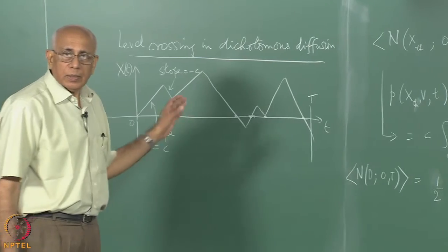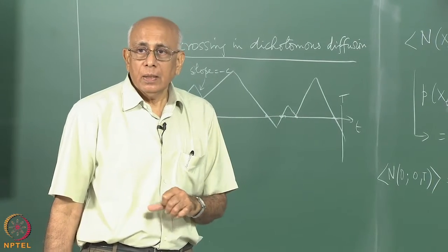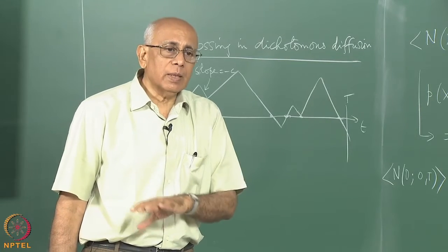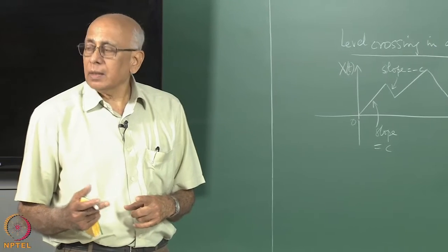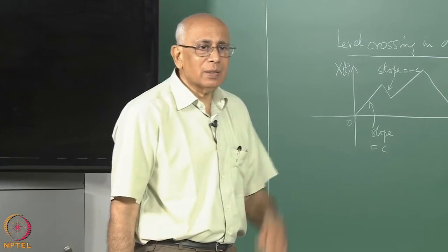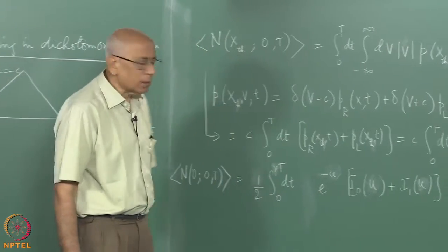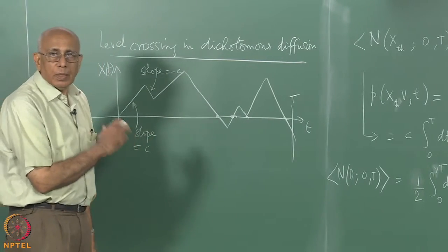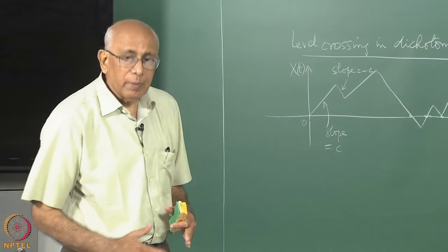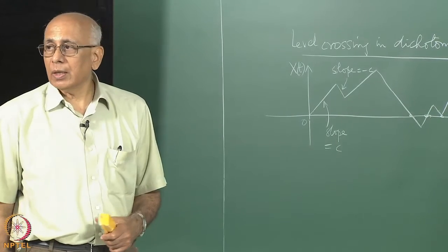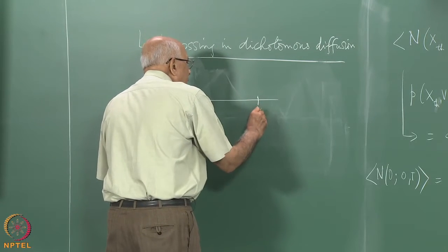One immediate generalization is to allow the reversal rate from +c to −c to differ from the rate from −c to +c — this is like integrating a dichotomous process with different switching rates. In that case the master equation is slightly more complicated but still solvable in closed form. Another non-trivial property to investigate is the first passage time distribution: starting from the origin, what is the distribution of the time to first hit a point x?